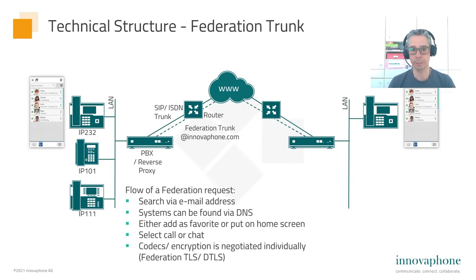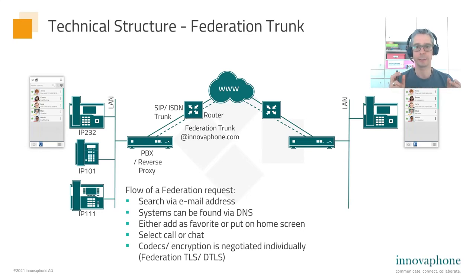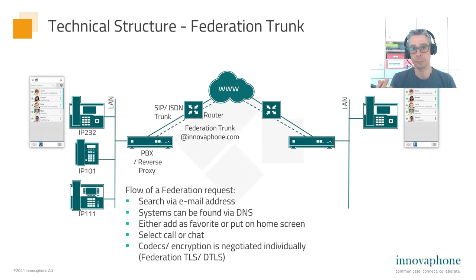First you search the email address, the other system is found via DNS, and then you can add the person to your favorites in your team. You can call the person or do a chat, and the systems are able to do direct communication which can be end-to-end encrypted. It's absolutely secure when you use encryption like DTLS.